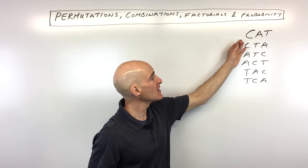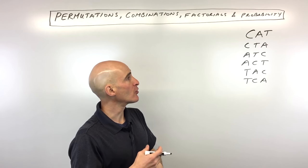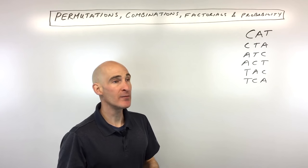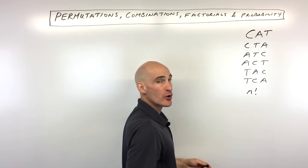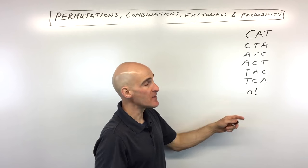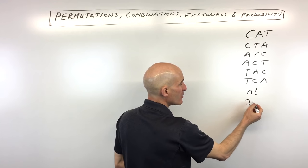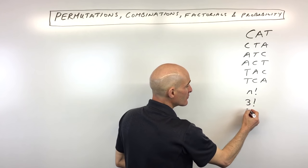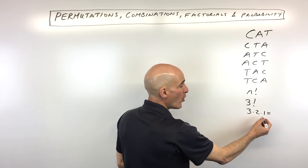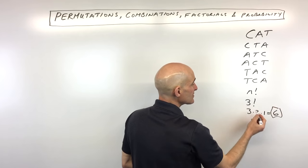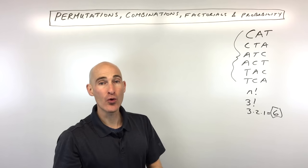There's another way to do this. When you're taking three items and you want to see how many different ways you can order them, you can use the formula n factorial. The way factorial works is you start at the number — in this case three — and multiply down to one. So three factorial equals three times two times one, which equals six. And we found six different permutations.